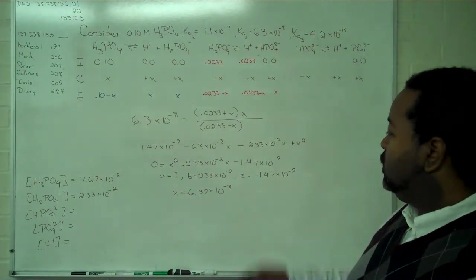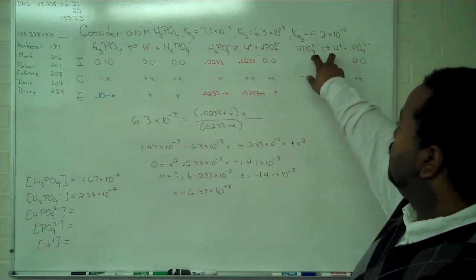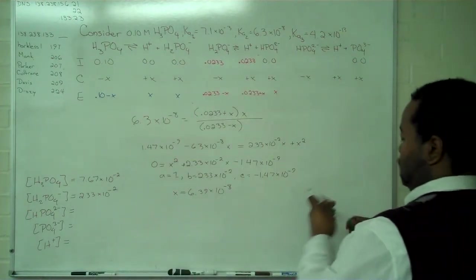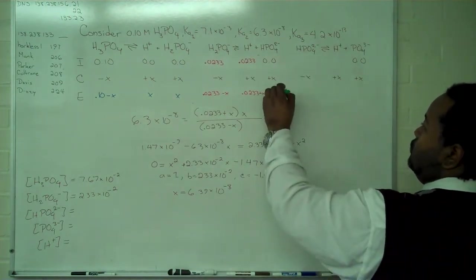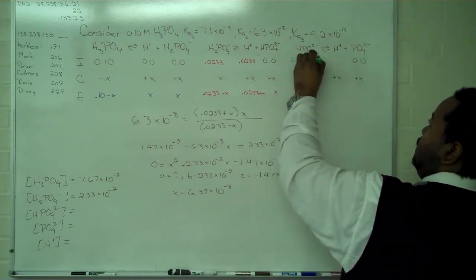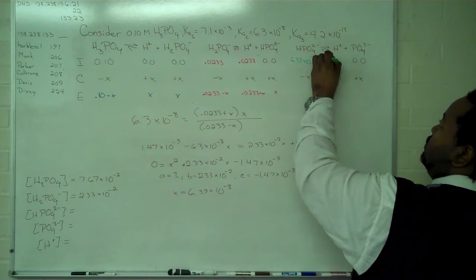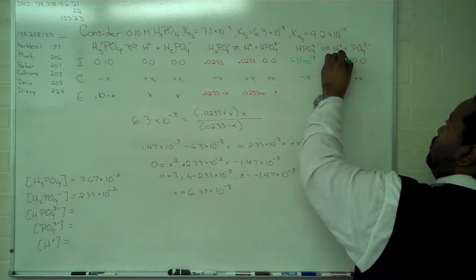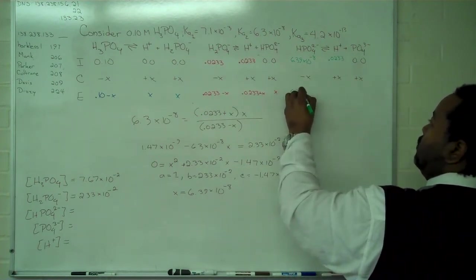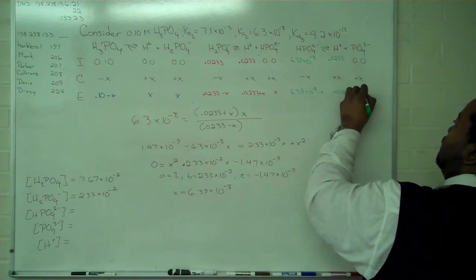So now we want to take this value for x and use these results to plug in here. So this value goes here: 6.39 times 10 to the negative 8. And again we know that's very small relative to this value. So for our hydrogen, 0.0233. This allows us to write in the final line at equilibrium: 6.39 times 10 to the negative 8 minus x, 0.0233 plus x, and just x.